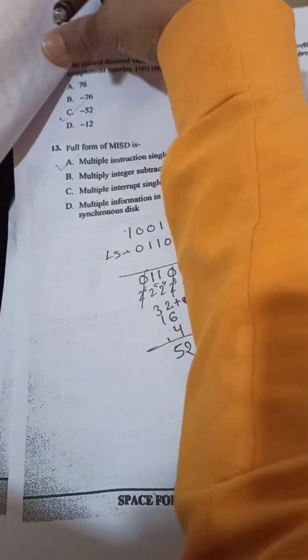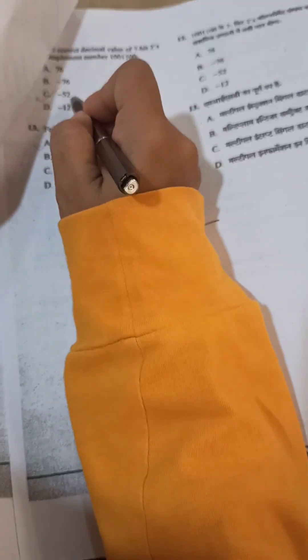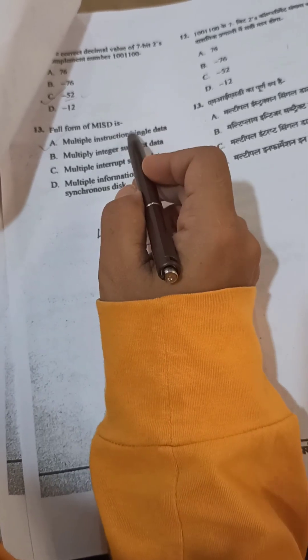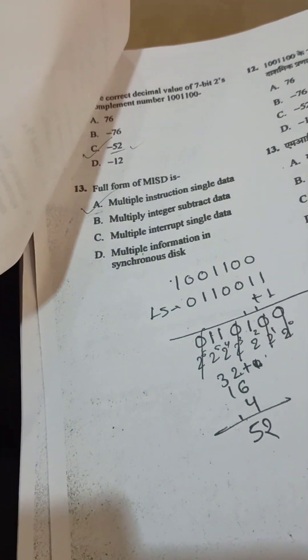Then you can see question number 12, 52 will be the answer key. Question number 13, MSID. This is the answer key.